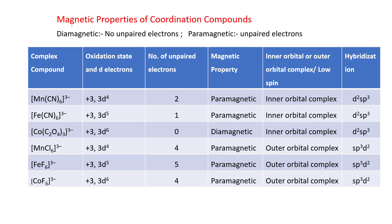VBT can explain the magnetic properties of coordination compounds. If a substance is diamagnetic, there are no unpaired electrons — all electrons are paired. If it is paramagnetic, some electrons are present as unpaired electrons.